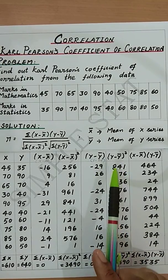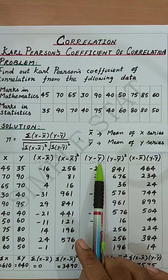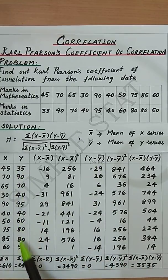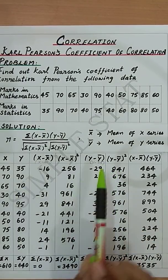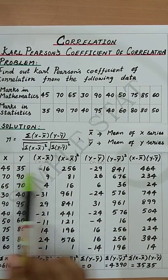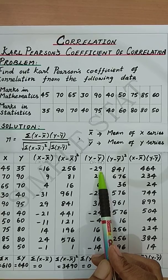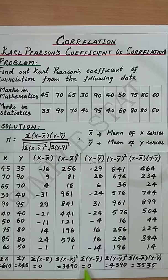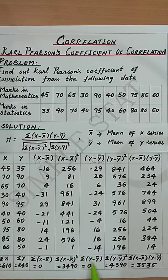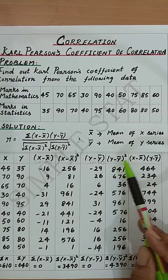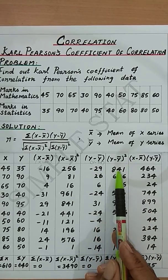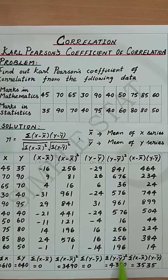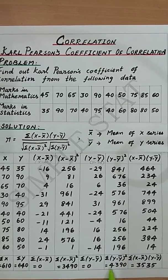Now find out y minus y bar which is nothing but y minus 64, which is obtained by subtracting each and every value under the variable y from 64. The first value will be 35 minus 64, you get minus 29. Next 90 minus 64 will give you 26, etc. And get its total which is summation (y minus y bar) equal to 0. Now find out y minus y bar whole square which is minus 29 square, 26 square, etc. And its total is summation (y minus y bar) whole square is 4390.